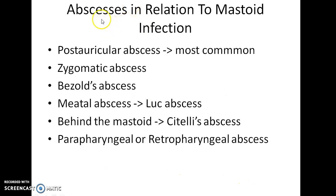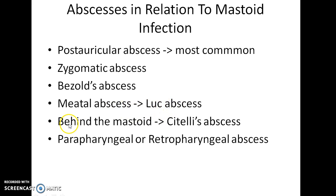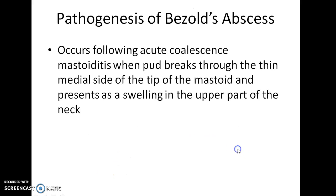Now let us see about the abscesses in relation to mastoid infection. Mastoid infection can cause post-auricular abscess, which is the most common. It can lead to zygomatic abscess, Bezold's abscess, meatal abscess which is called Luc's abscess, retro-mastoid abscess which is called Citelli's abscess, and parapharyngeal or retropharyngeal abscess.